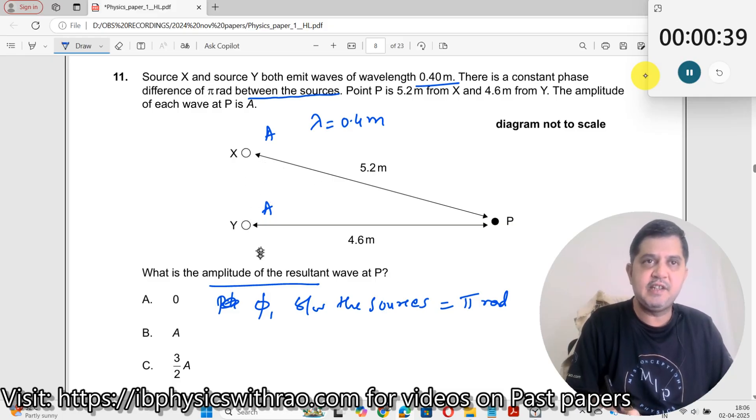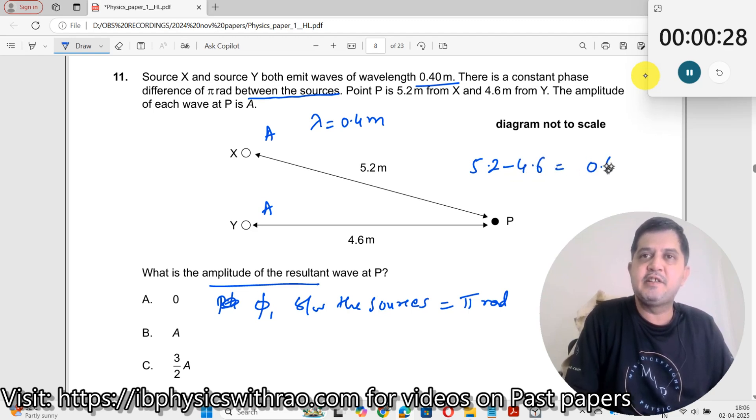Now with respect to X and Y, this already introduces a π radians. Now if I take the path difference between these two, what is the path difference? 5.2 minus 4.6, which is equal to 0.6 meters.